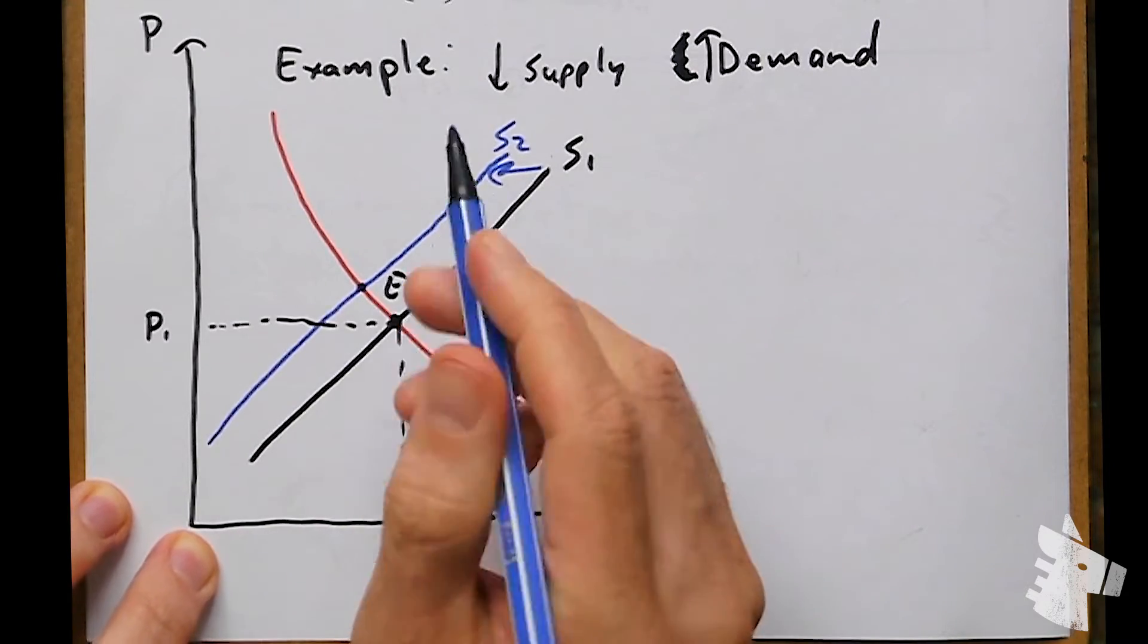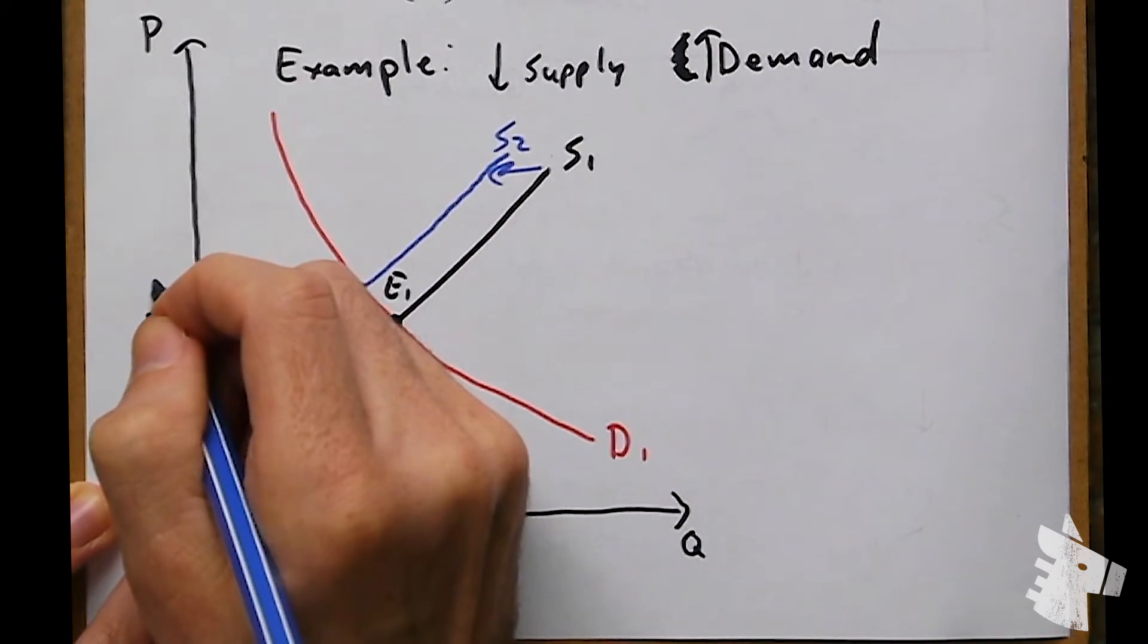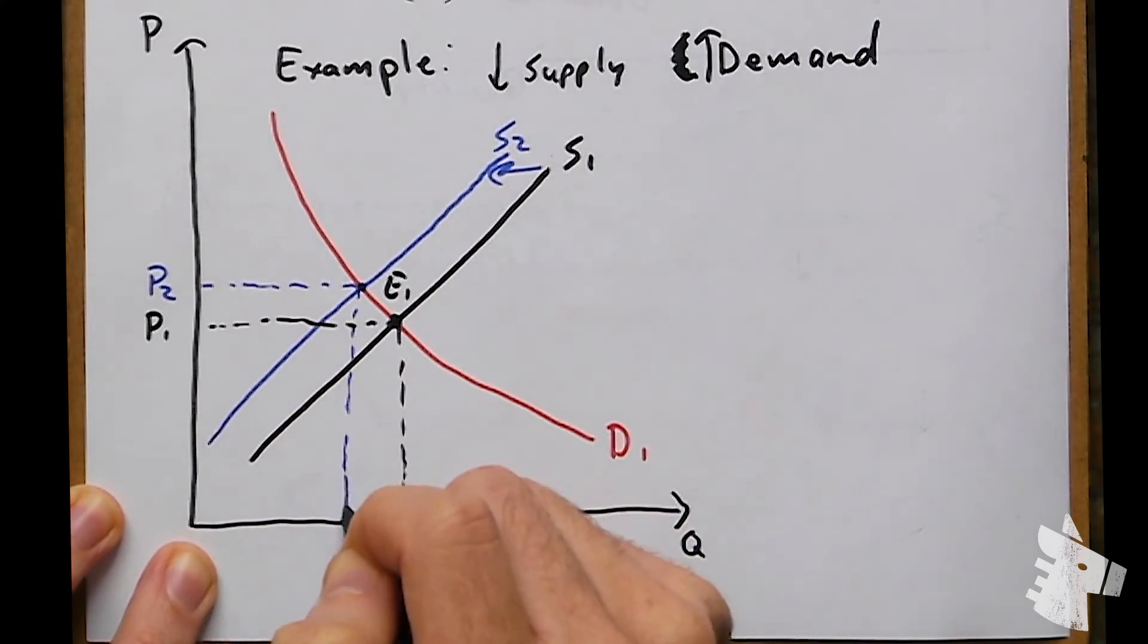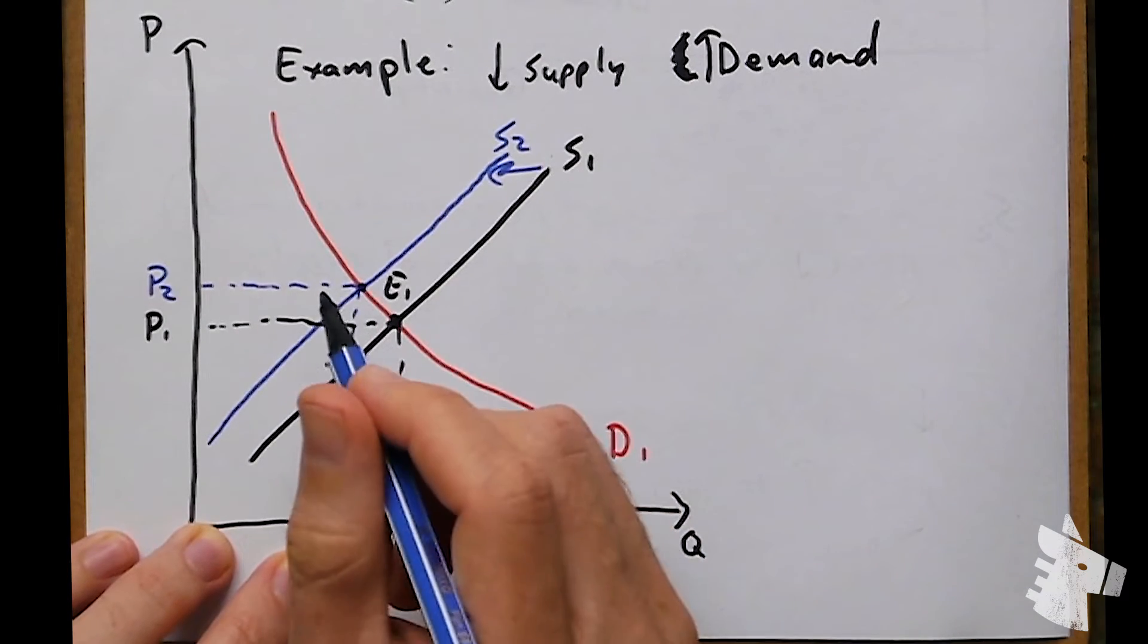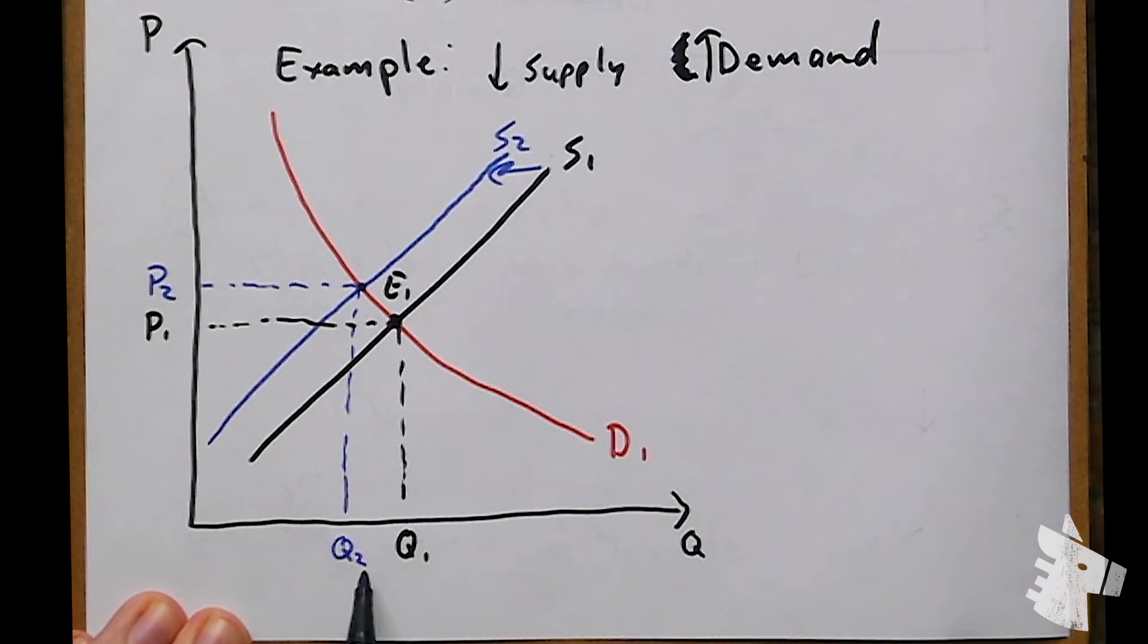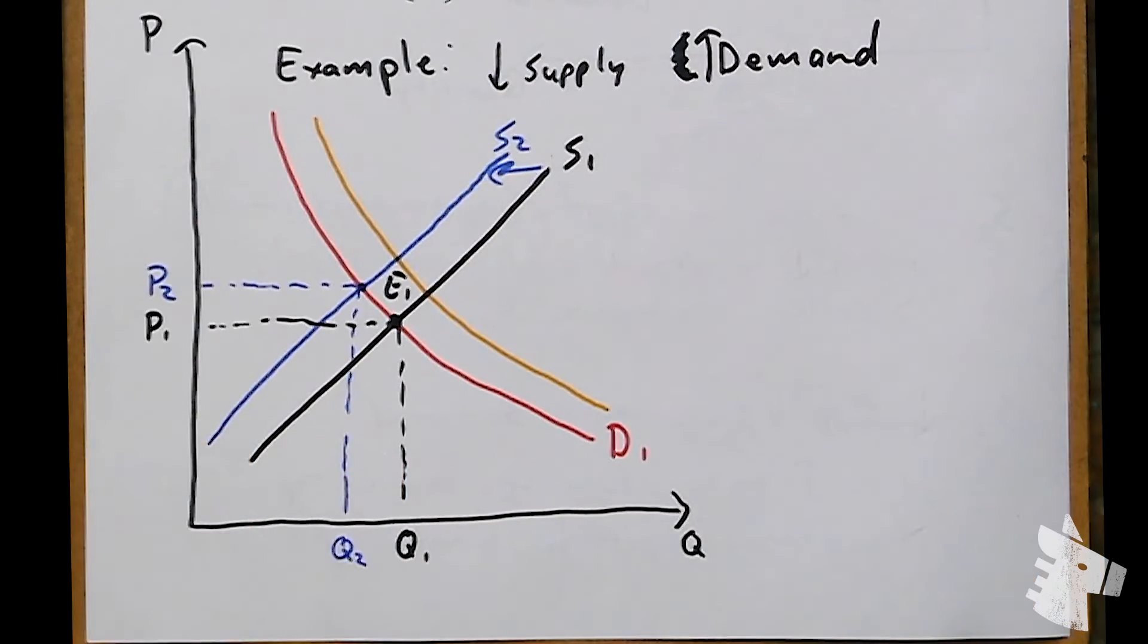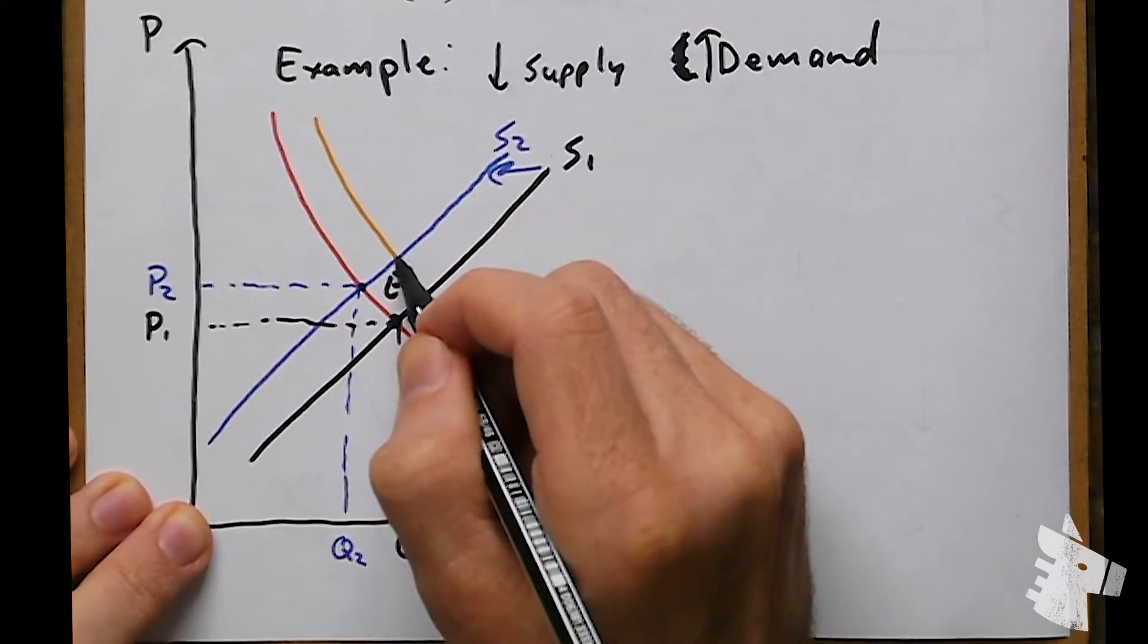Because demand remained constant and supply decreased, this put upward pressure on our price, so our new equilibrium price, P2, is higher than P1. Because demand remained the same with lower supply, there will be more competition among buyers for a smaller amount of coffee. So we have Q2, lower quantity, at a higher price. Let's say at the same time, demand increased for some reason. So our demand curve shifts outward, this is D2. So more coffee is demanded, but supply is not moving from S2.